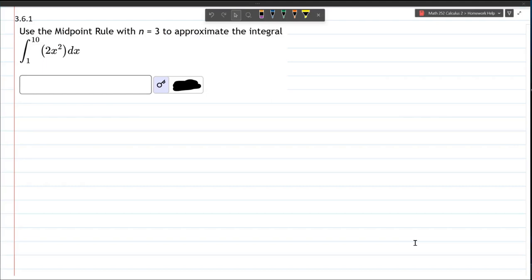When you approximate, you're not going to take an antiderivative. You're just going to use basically geometry.